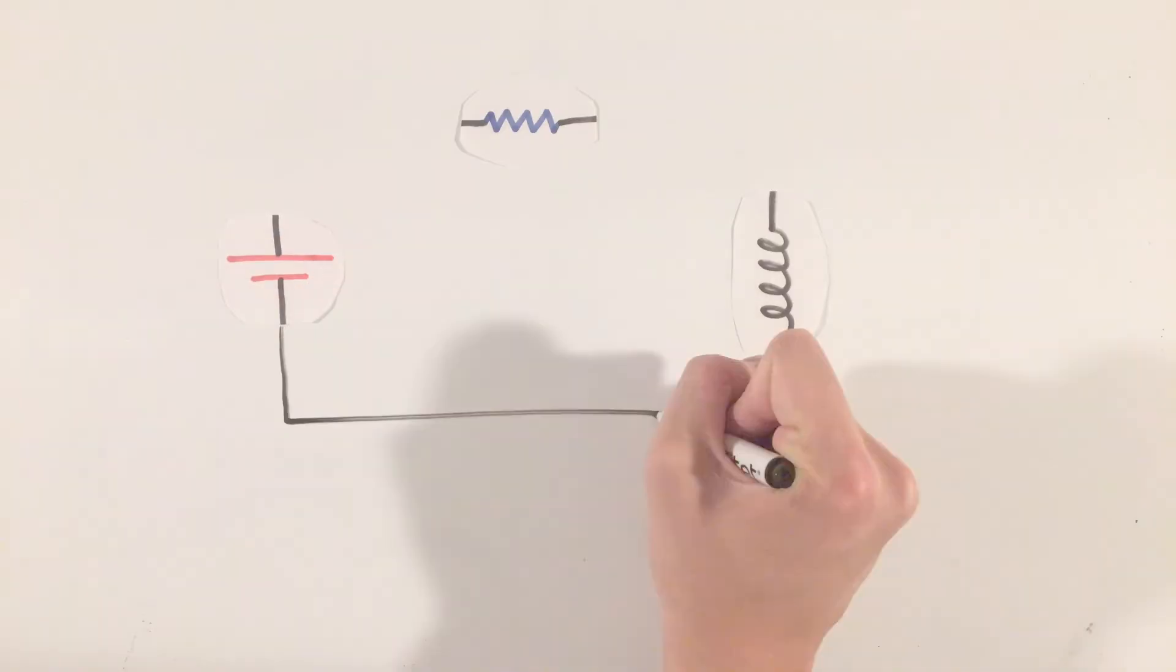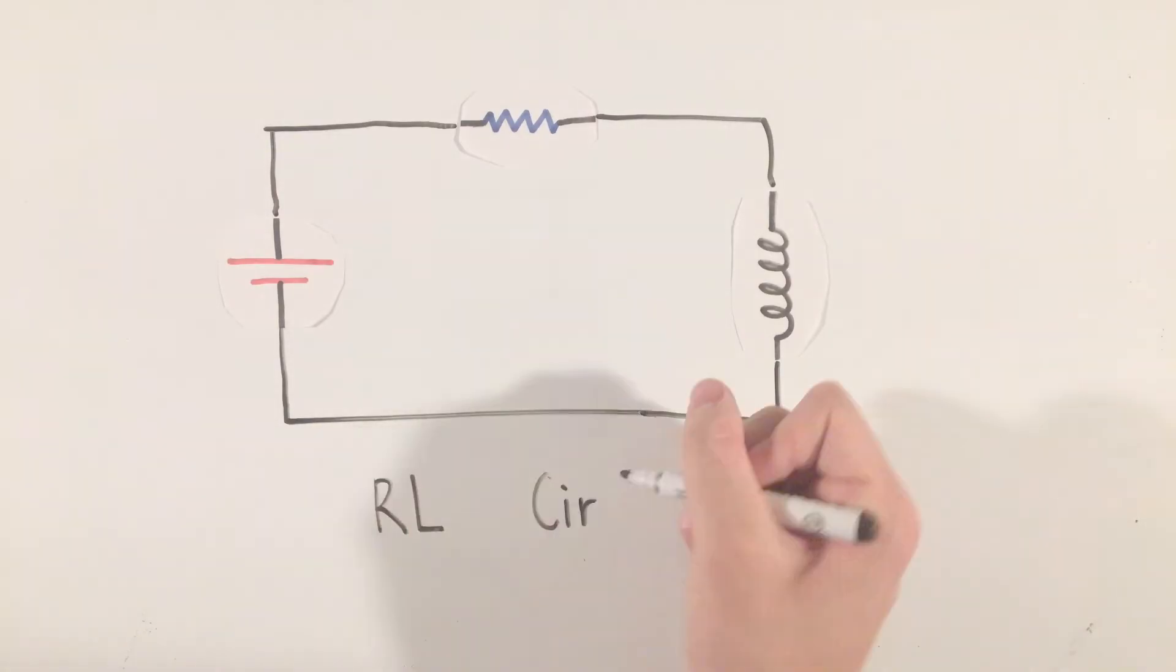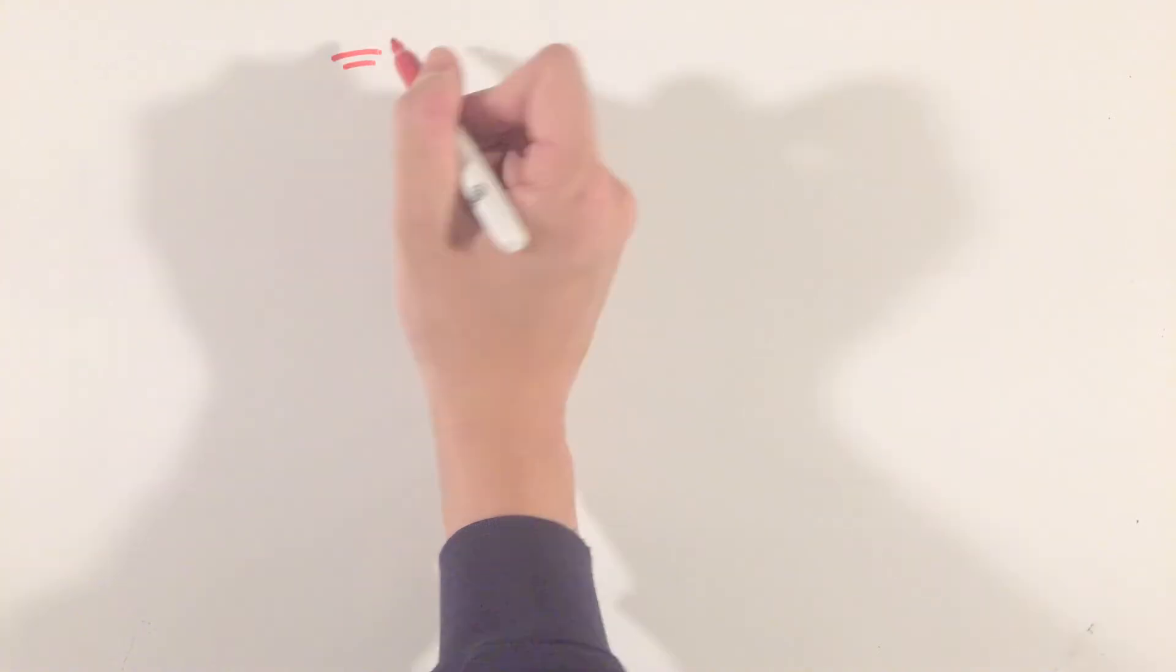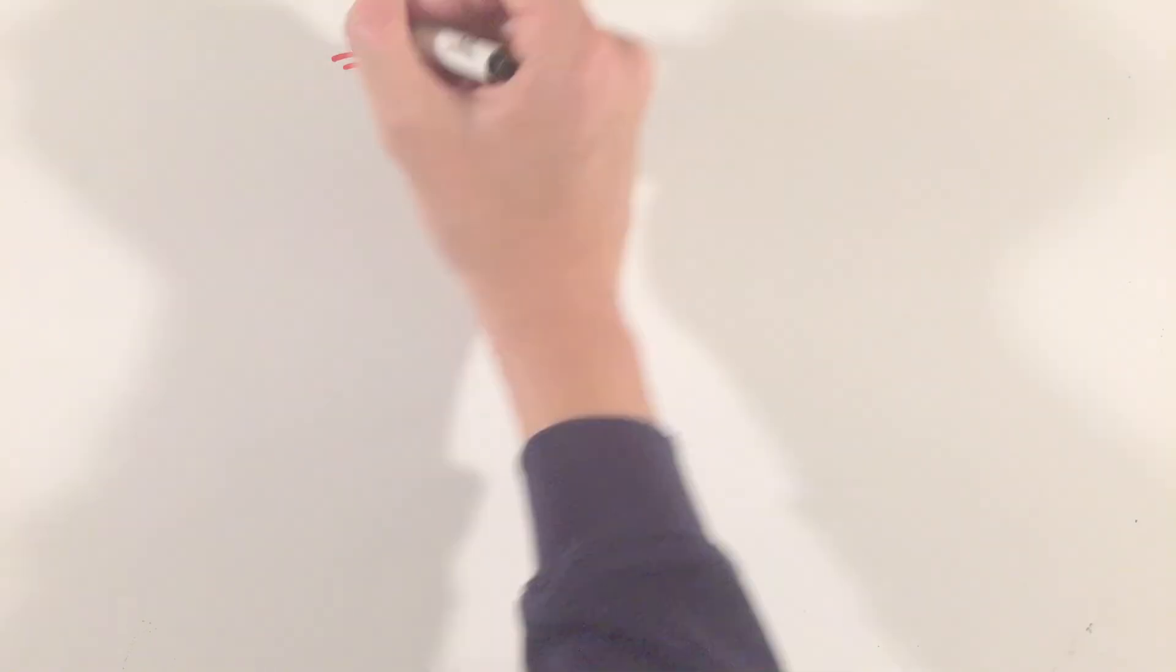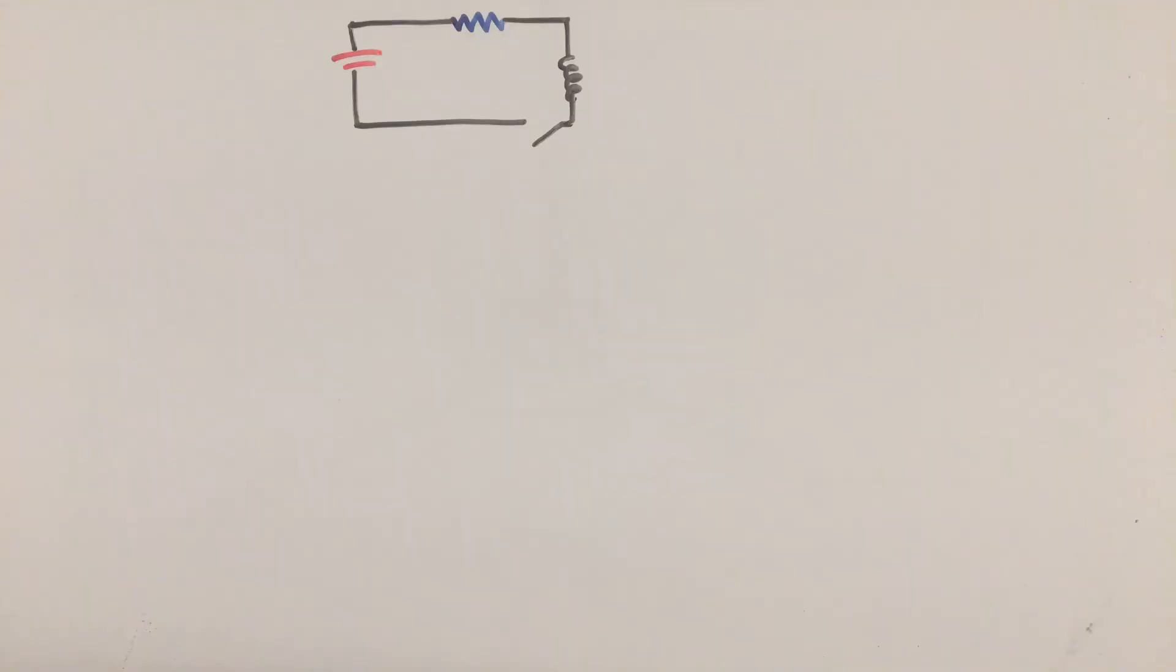A near identical process can be applied to RL circuits, or circuits with resistors and inductors. Looking at a situation where the charge slowly begins to increase, analogous to the charging of a capacitor in an RC circuit, we can once again use Kirchhoff's loop rule.